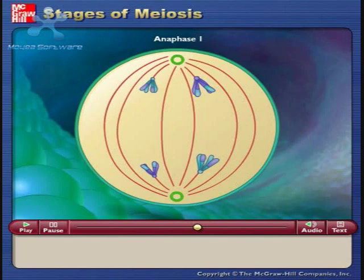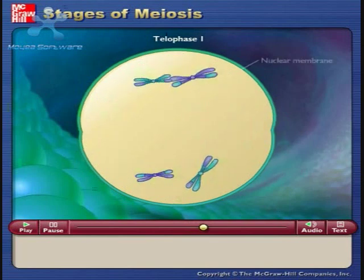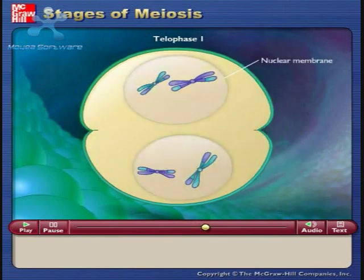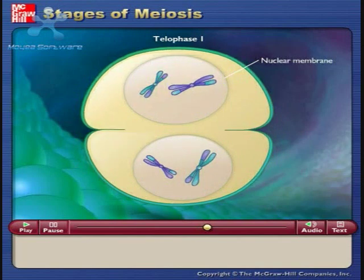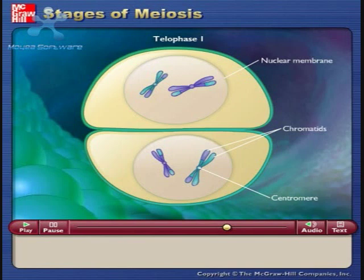During telophase I, the nuclear membrane reforms around the daughter nuclei. Each daughter nucleus contains two sister chromatids for each chromosome attached to a common centromere. Because of crossing over, the two sister chromatids are not identical.